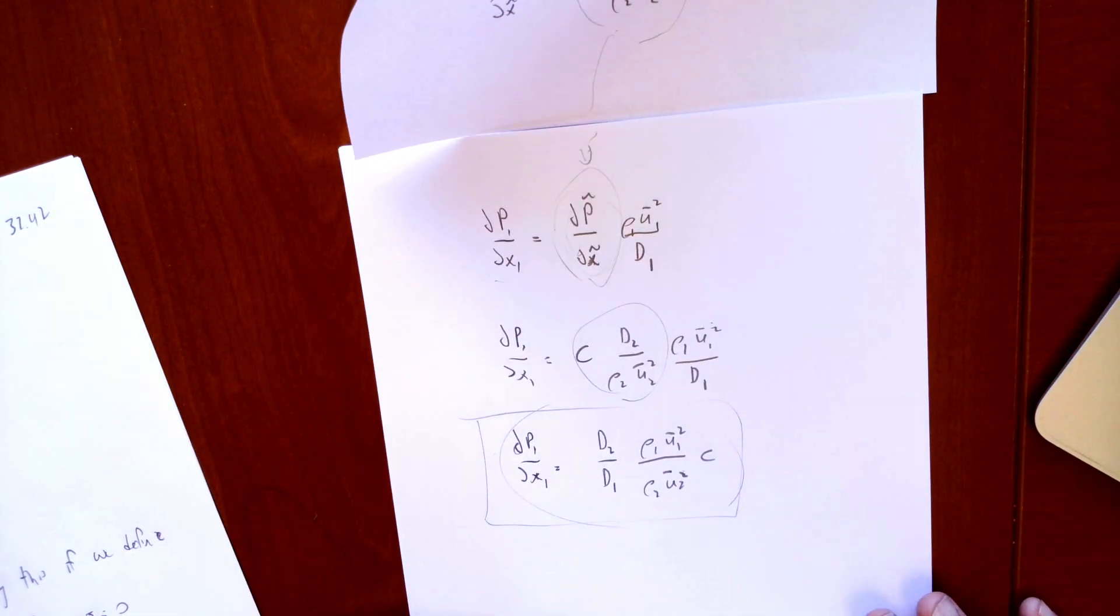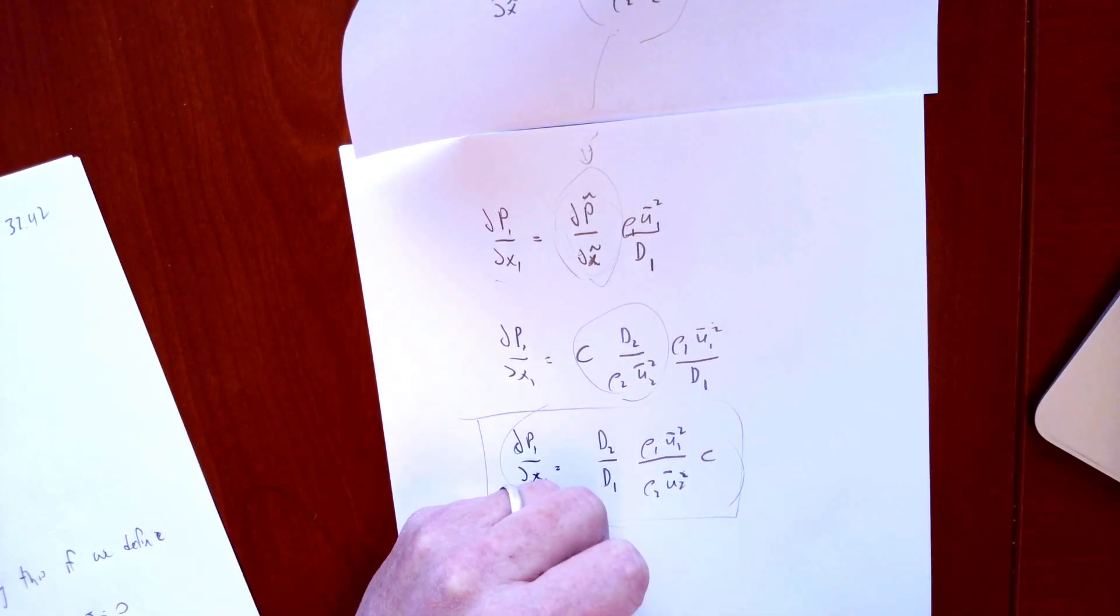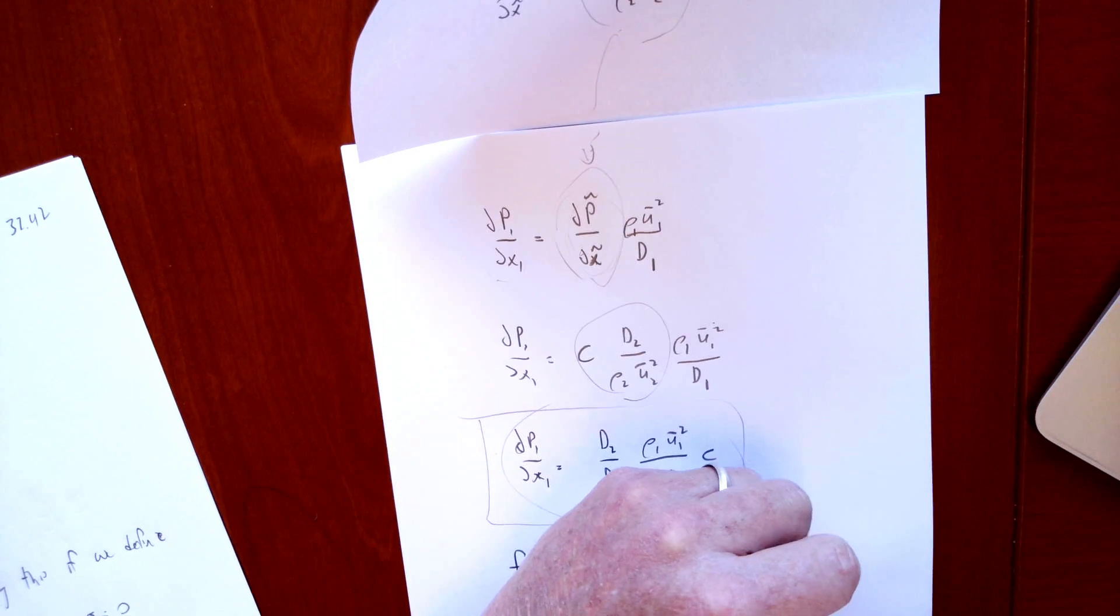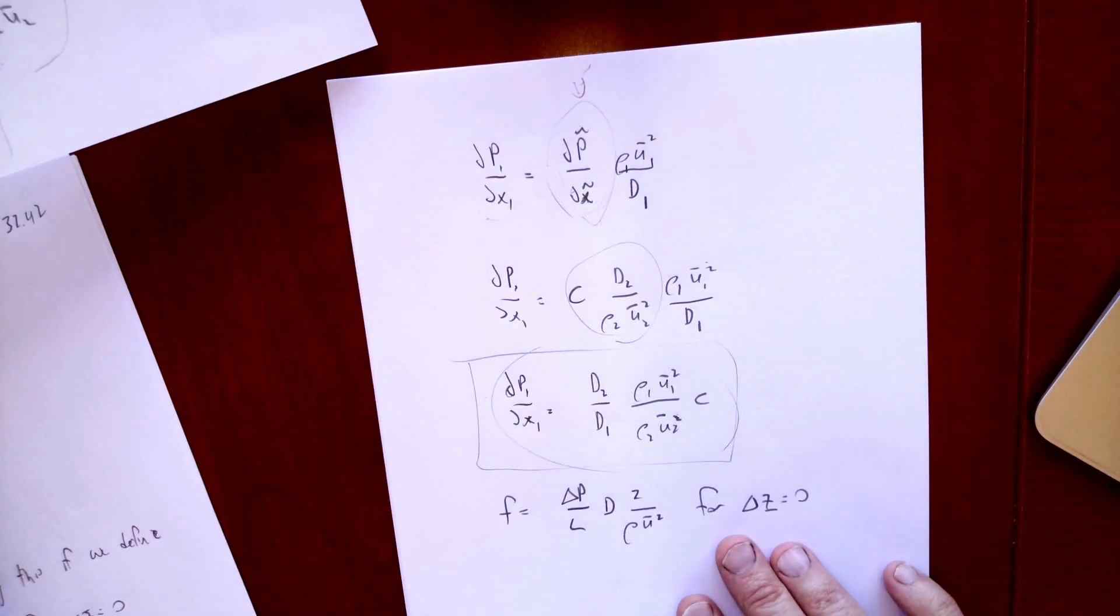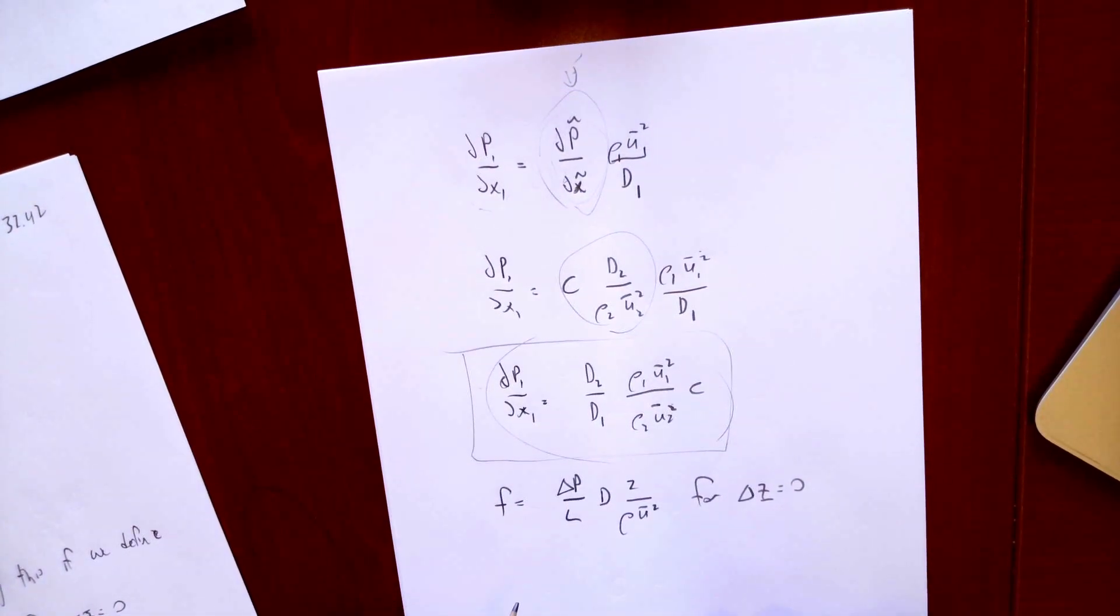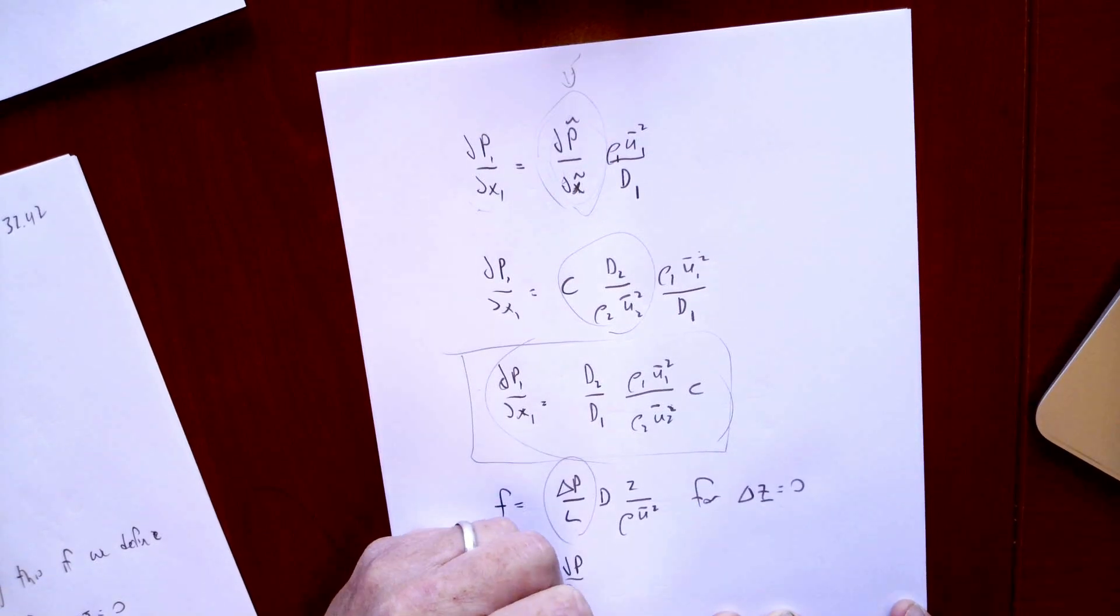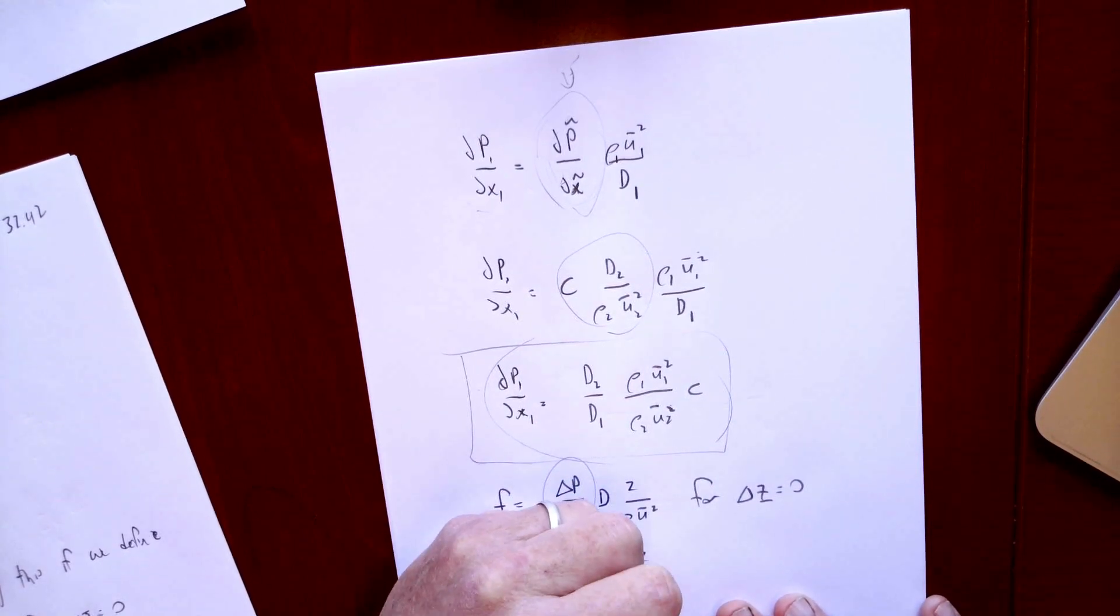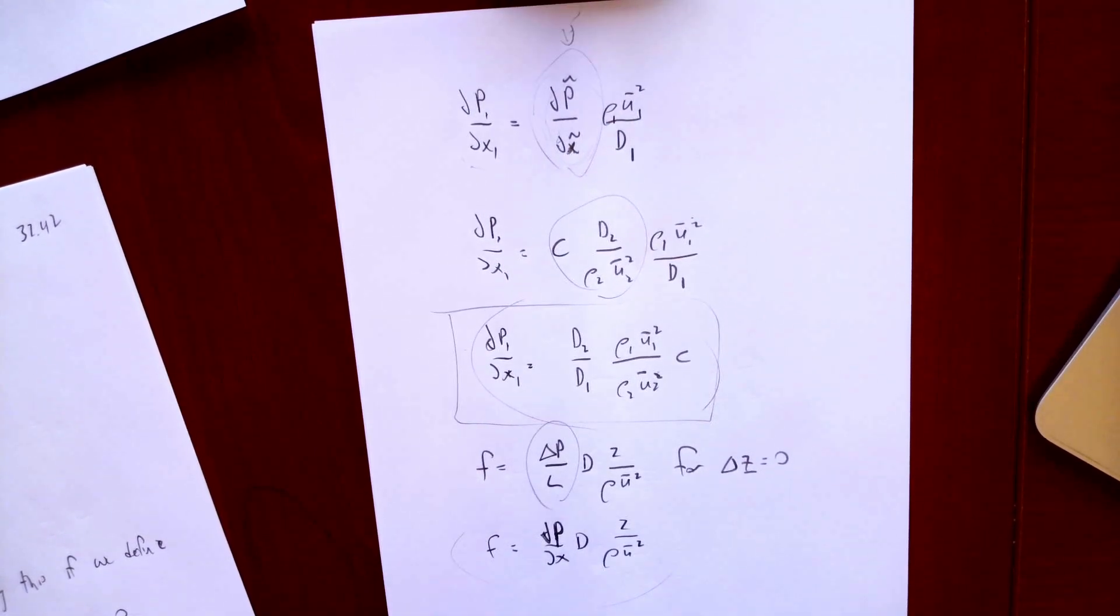But we can simplify this and see how the friction factor really plays a role here by taking a look at the definition of the friction factor. So we have f equals ΔP over L times D over 2ρU̅ squared. That's the definition of the friction factor if there is no significant height change. We can rewrite that as ΔP over L is just DP/DX, so that's DP/DX times D times 2 over ρU̅ squared.